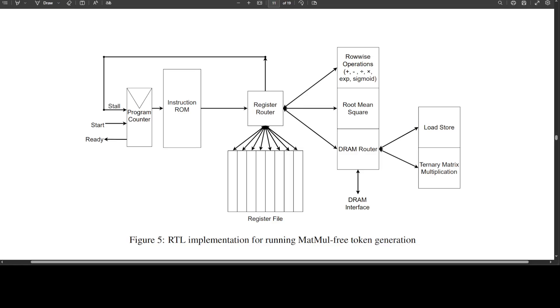There is a root mean square functional unit that uses a specialized hardware algorithm to preserve precision. And then we have this ternary matrix multiplication functional unit that takes in a DRAM address for a ternary matrix, then performs a ternary matmul on the specified vector.